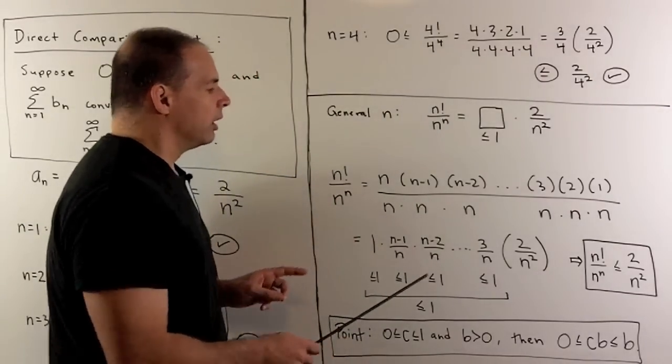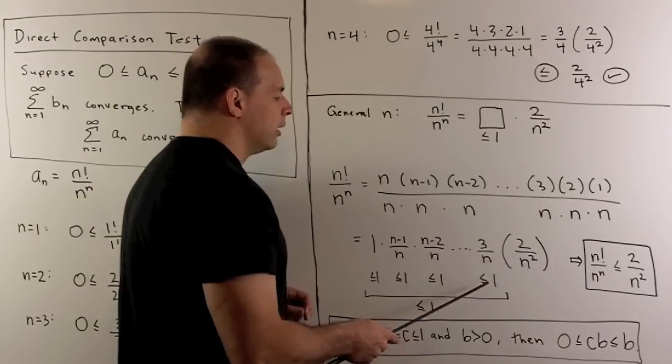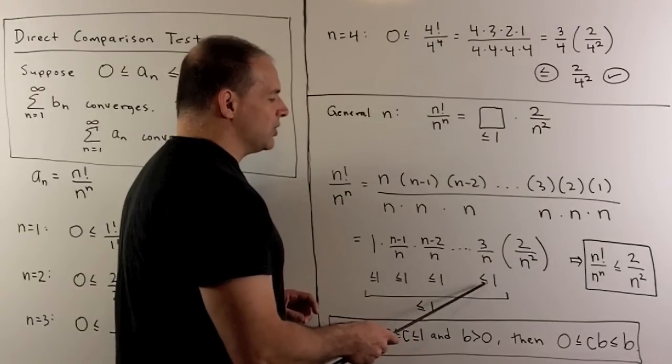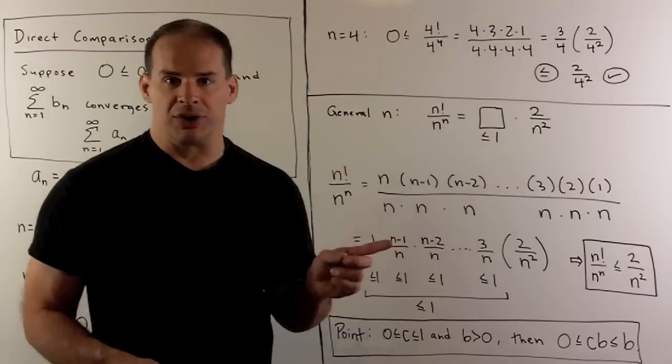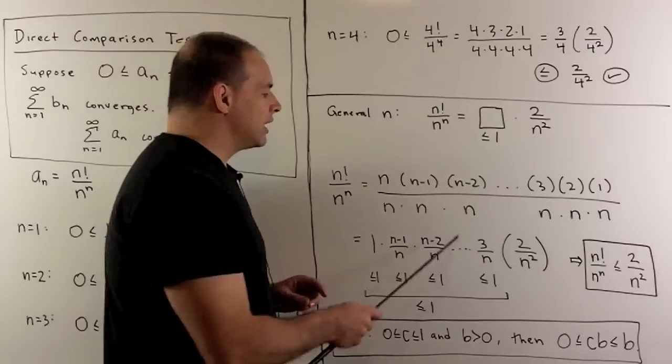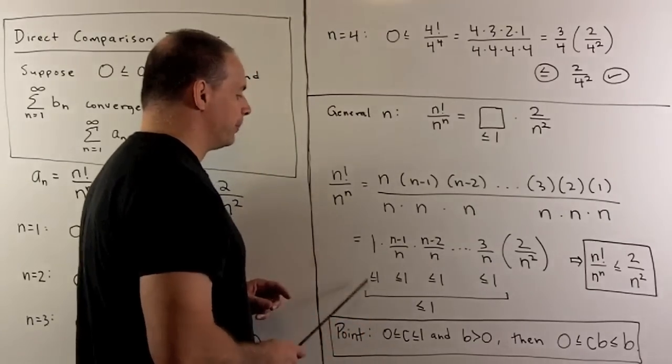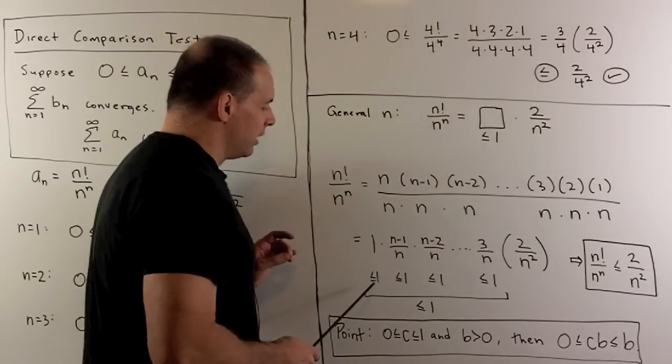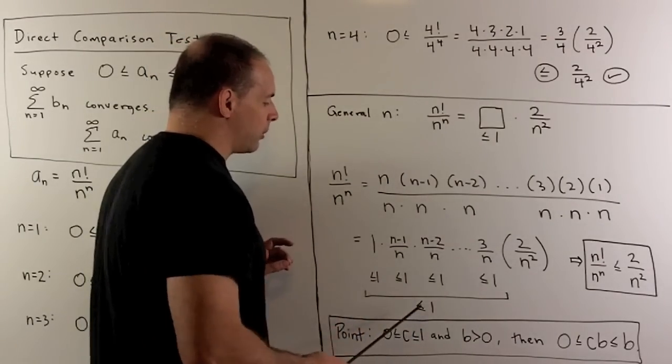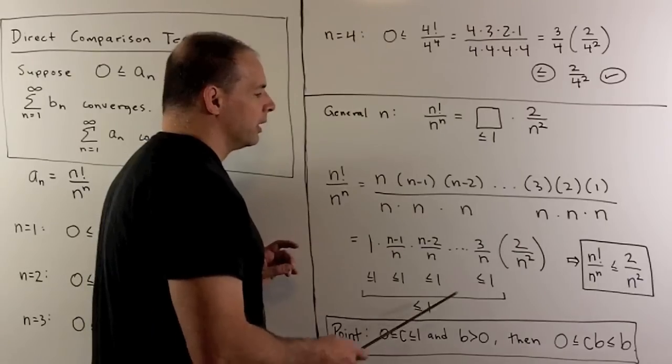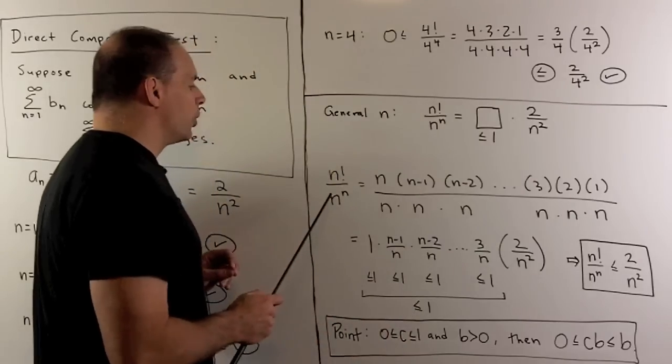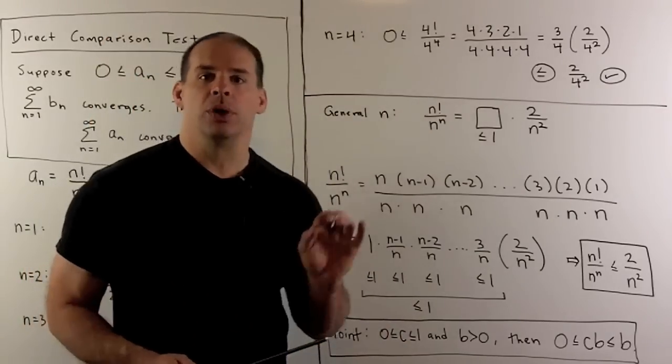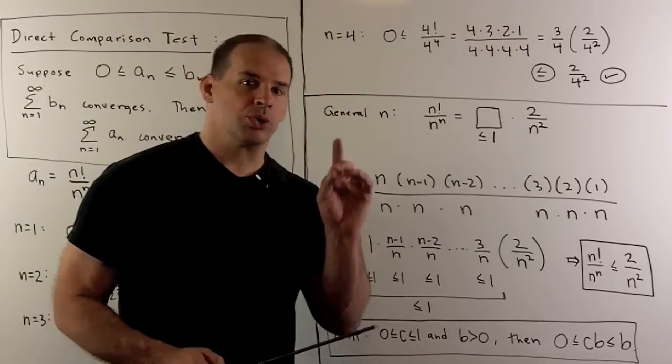Now, what we're doing here, we're taking our 2 over n squared. We're going to multiply it by a number that's between 0 and 1. So that number is going to be between 0 and 2 over n squared. Then we're going to keep doing that for each of these terms. So what happens is, I can think of this number as just being a number between 0 and 1. We hit it with 2 over n squared. So that means our n factorial over n to the n is less than or equal to 2 over n squared, which is what we're looking for. So that's going to be our direct comparison test argument.